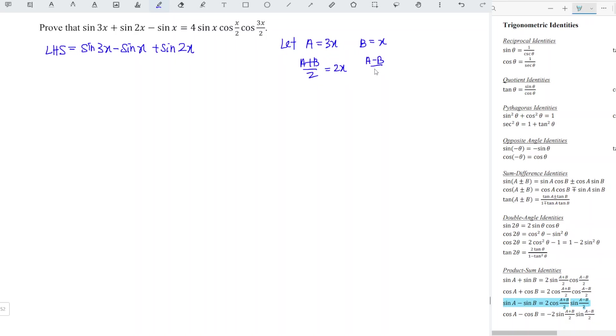Rewrite the equation so we should have 2 cos 2x sine x plus sine 2x. Here we can apply the double angle identity.